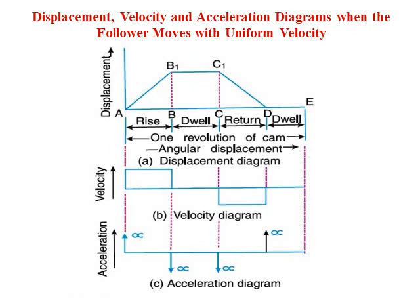As seen in the sketch, the displacement, velocity, and acceleration diagram has been shown when the follower moves with uniform velocity. This is drawn for a knife-edge follower moving with uniform velocity. The x-axis represents time — that is, the number of seconds required for the cam to complete one revolution — or it may represent the angular displacement of the cam in degrees. The full rotation is 360 degrees, which can be divided into rise, dwell, return, and dwell depending on the angular rotation of the cam.